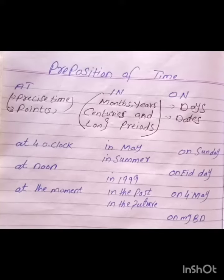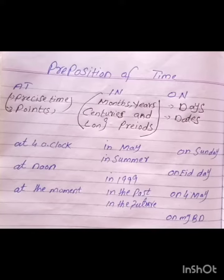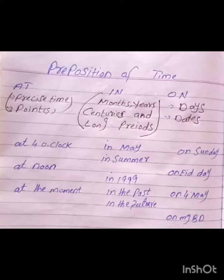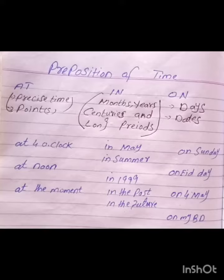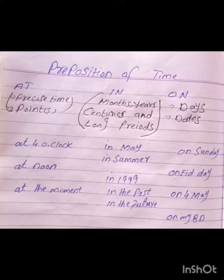Today we will talk about prepositions of time. We use 'at' with precise time — precise means accurate time. For example, if we are talking about the exact time of the day: at four o'clock, at five o'clock, at nine o'clock.